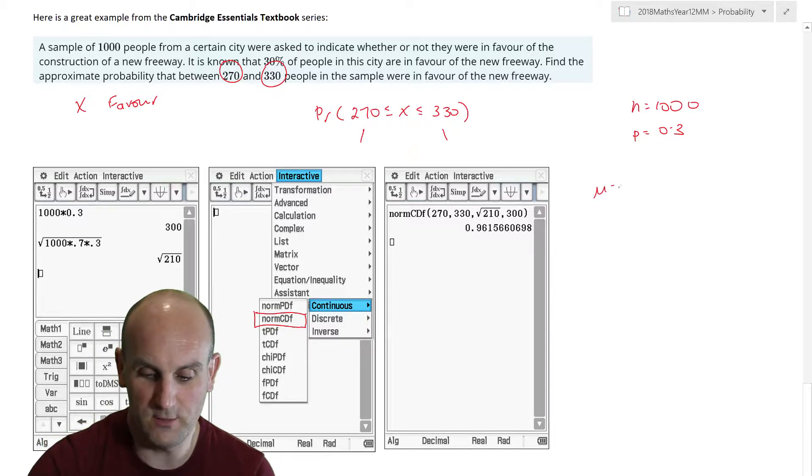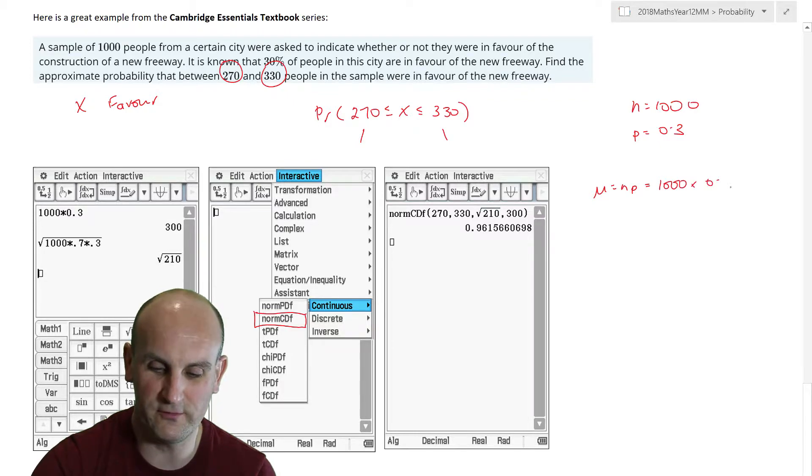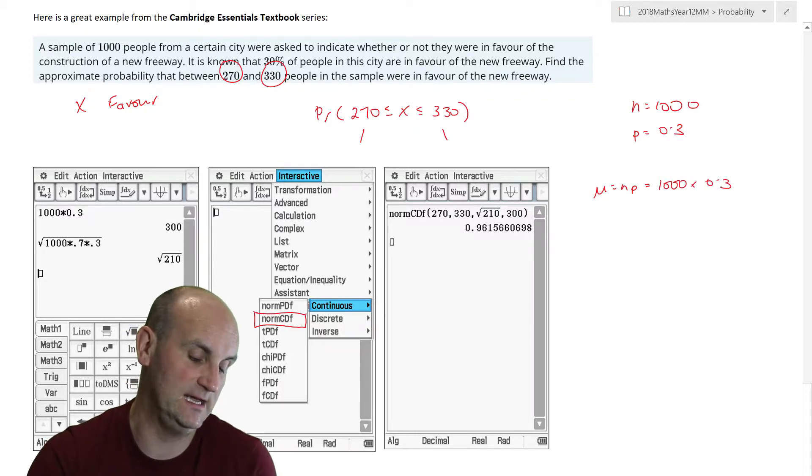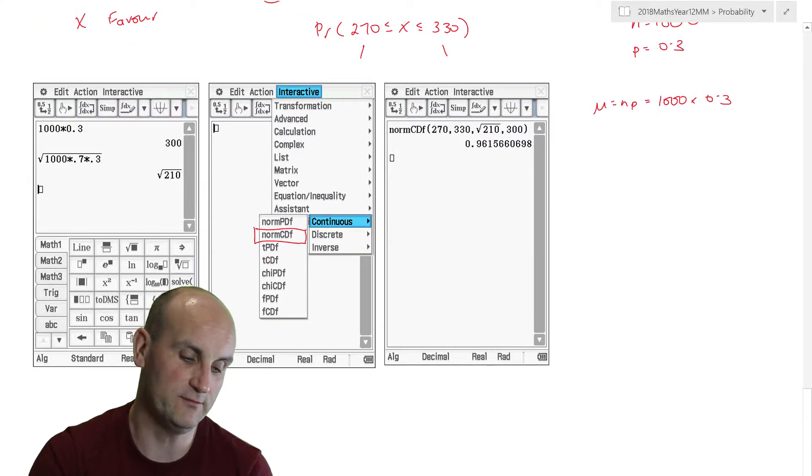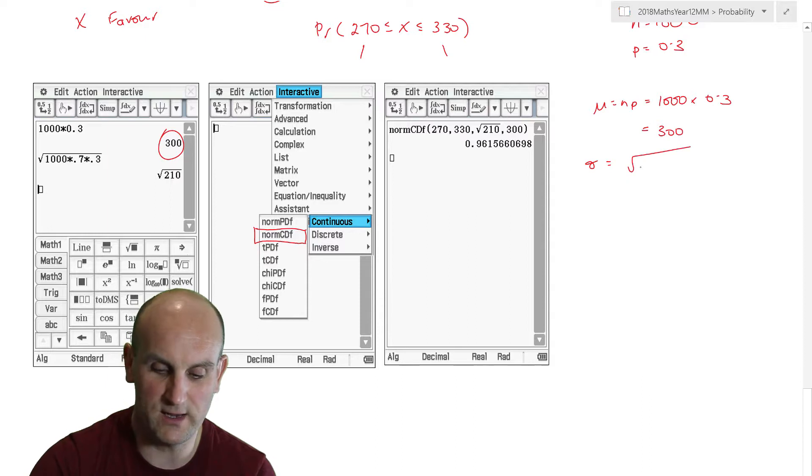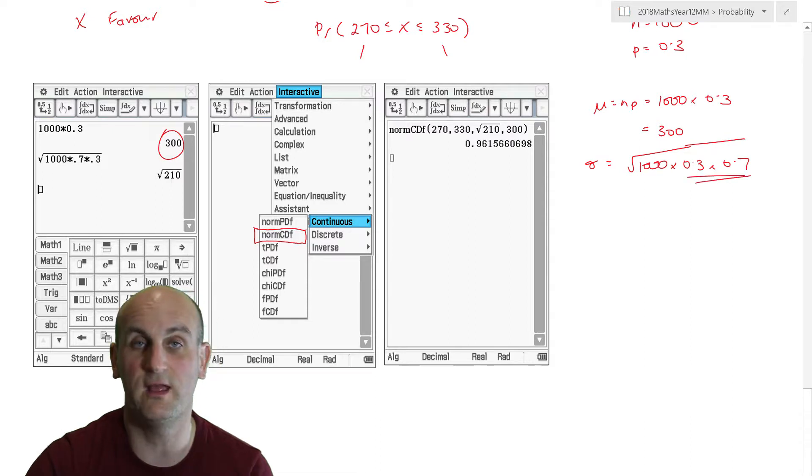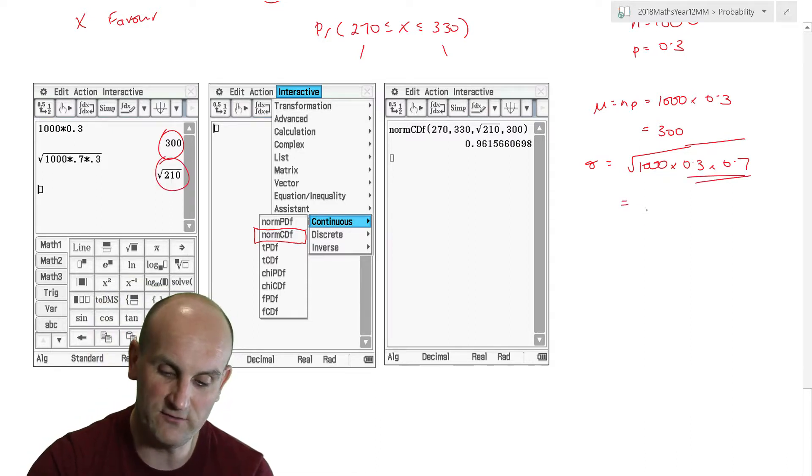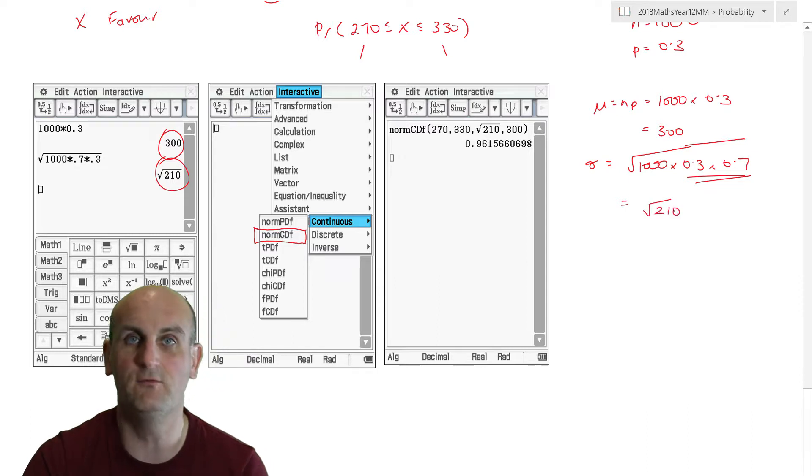So we know that mu is given by NP, which is 1,000 times 0.3. And as you can happen to see here, rather than bring up my calculator, I have some rather nifty screenshots. So there's my 300. Thank you very much. I know that sigma is given by the square root of 1,000 times 0.3 times 0.7. Those values there always have to add up to 1. So again, what does that give me? Well, I've left it in a third form for the moment rather than decimal so that I don't move decimal points.